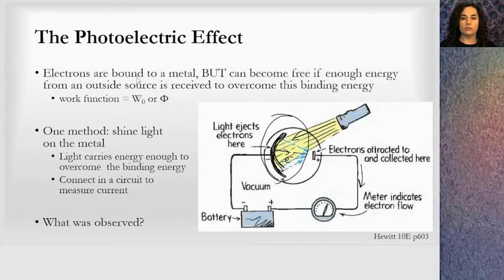The electrons are bound to the metal but can become free if enough energy from an outside source is received to overcome the binding energy of this electron. The binding energy of this electron is what we call the work function, designated by W-naught for the work function or capital letter Phi. Be prepared because I've seen it in different ways in different texts.